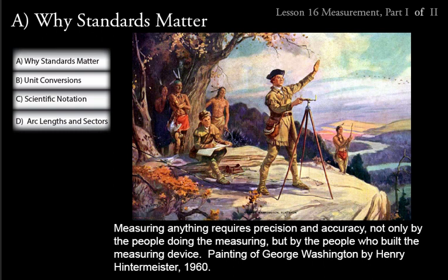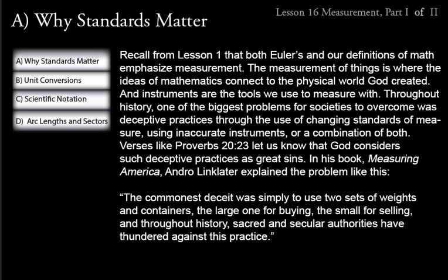George Washington was the first president of the United States. But before that, he was very involved with measurement — with measuring land. Something important to understand here is that measuring anything requires precision and accuracy, not only by the people doing the measuring, but by the people who built the measuring device, the instrument.